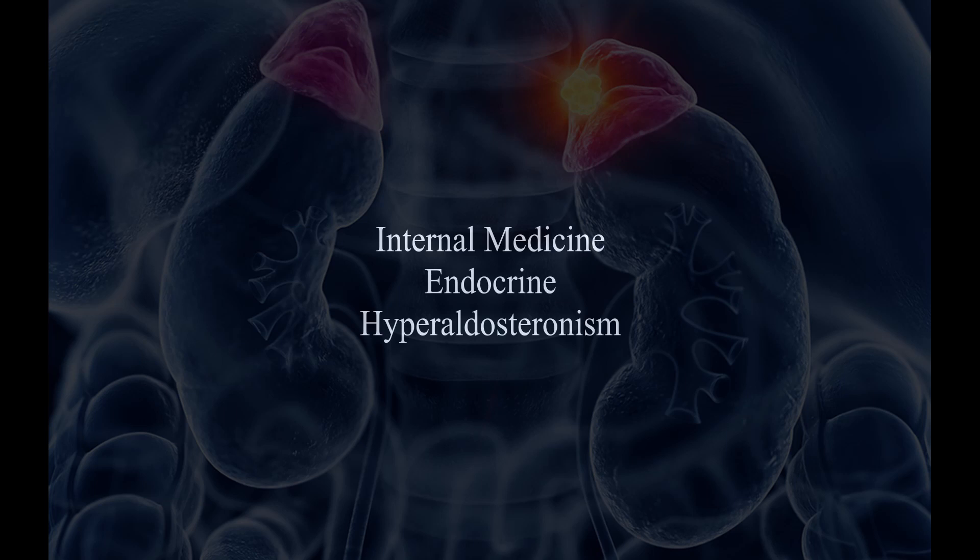If it's over 20 and the aldosterone level is more than 50 nanograms per deciliter, this really suggests primary hyperaldosteronism, and you can confirm this with adrenal suppression testing.